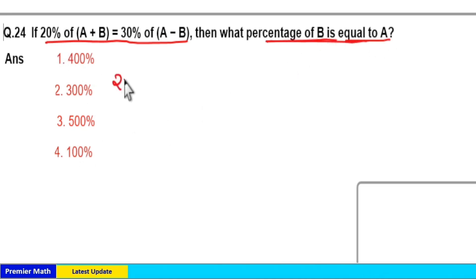Here 20% means 1 by 5. Write 20% of a plus b is equal to 30% of a minus b.